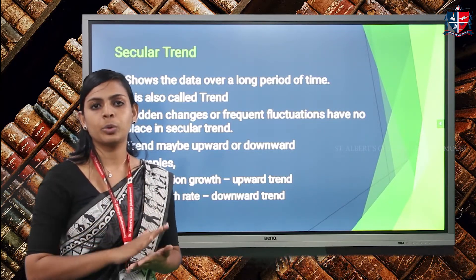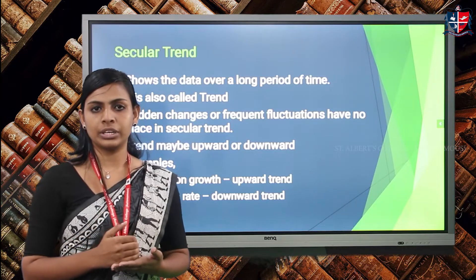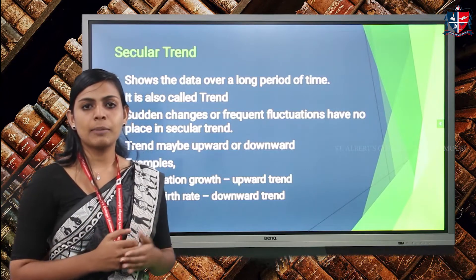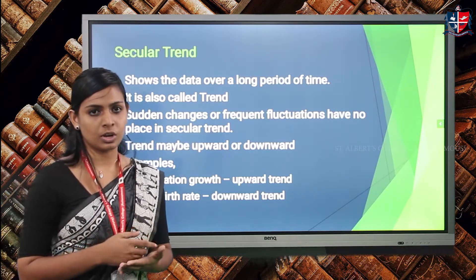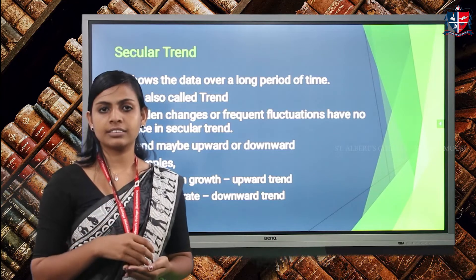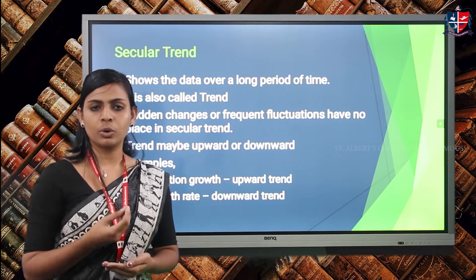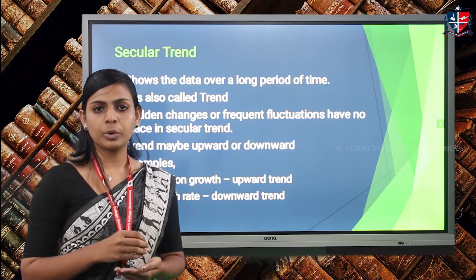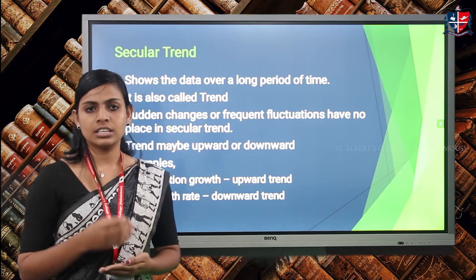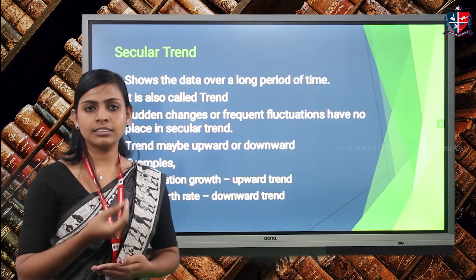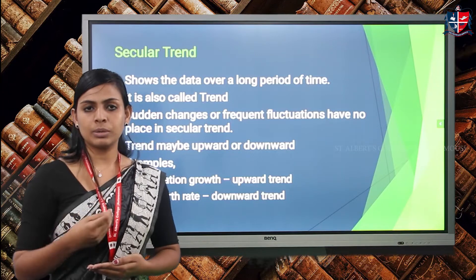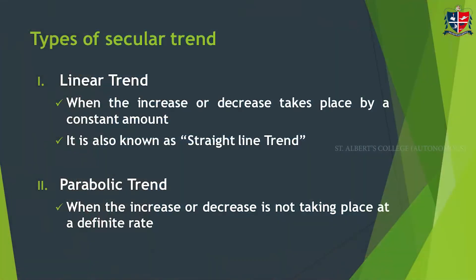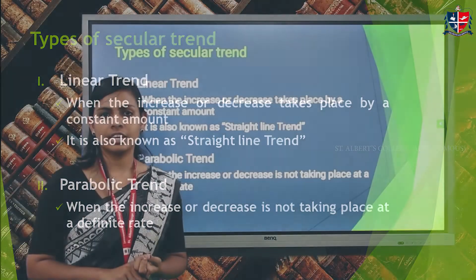Secular trend will be either an upward moving trend or a downward moving trend. An example of an upward moving trend is population growth — in developing countries like India the population grows each year. An example of a downward moving trend is low birth rate, where the birth rate decreases year by year.